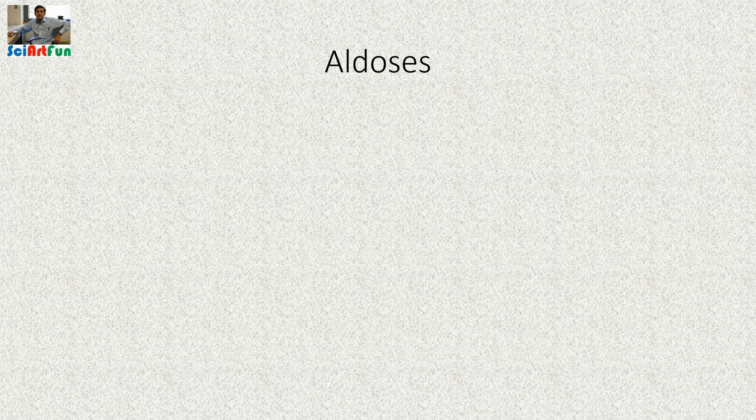Assalamu alaikum friends, this is Roshan Ali. Today I will be showing you some tricks and mnemonics for drawing the structures of carbohydrates, and today's video is about the aldose sugars. It is very difficult to memorize the structures of carbohydrates — you must know which carbons in which sugars have hydroxyl groups on the right side and which have hydroxyl groups on the left side.